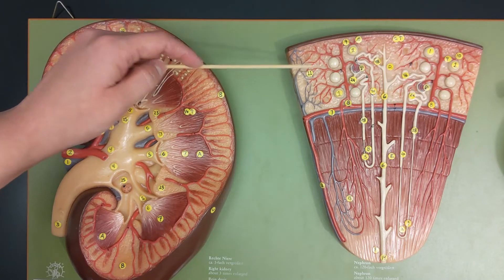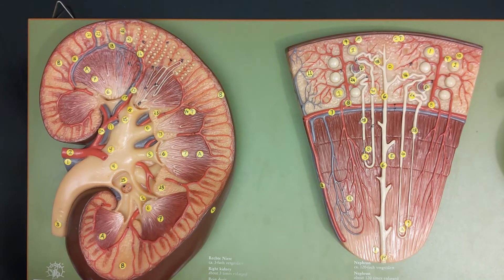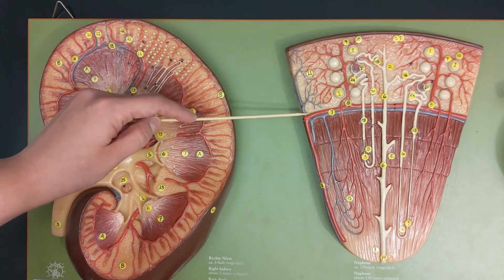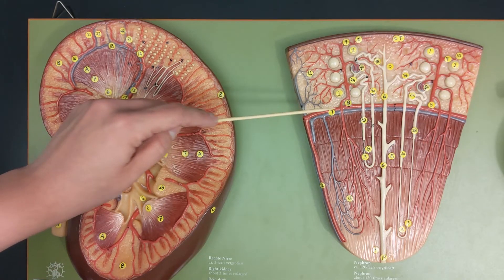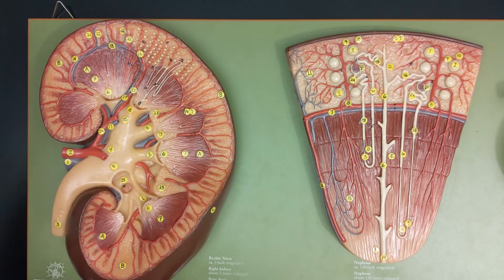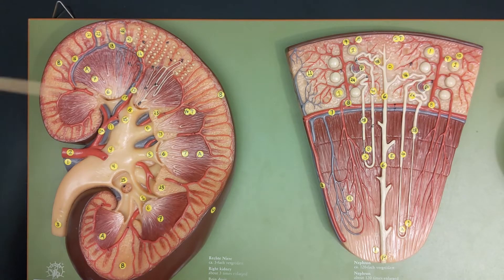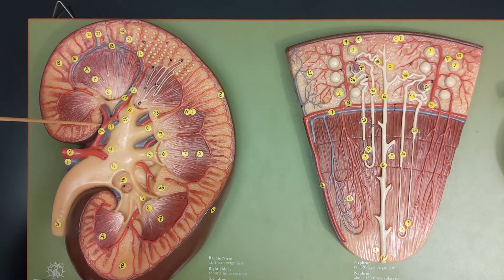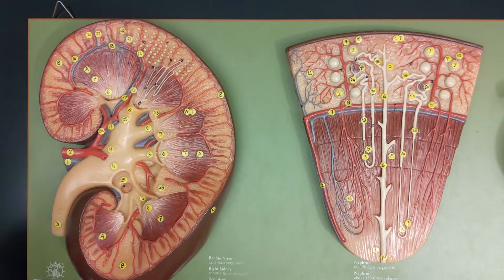The peritubular capillaries lead into a vein named the same as the artery: the cortical radiate vein. The cortical radiate veins lead into arcuate veins, and the arcuate veins go to the interlobar veins. Now, there are no segmental veins — the interlobar veins meet up directly at the renal vein. I've looked at it many times and it looks like they should be segmental veins, but they're not, so I just have to smile, nod, and agree. No segmental veins, and I've never found a good reason why.